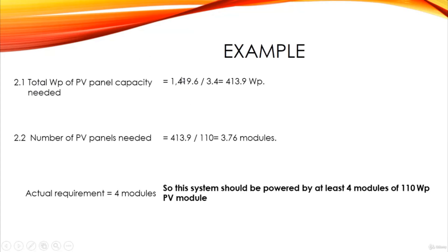Now let's apply this to our example. From step one, the total watt hours is 1419.6. To get the total watt peak capacity, we divide this by the panel generation factor of 3.43, giving us 413.9 Wp for our system. We are using a 110 watt peak module, so we divide 413.9 by 110, which gives us 3.76 modules.